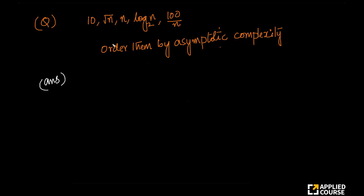Here is an interesting question. You are given these functions of n: one of them is a constant, the other is square root of n, the third one is n to the power 1, the fourth one is log n base 2, and the fifth one is 100 by n.